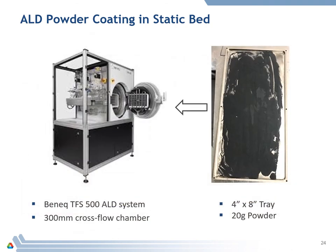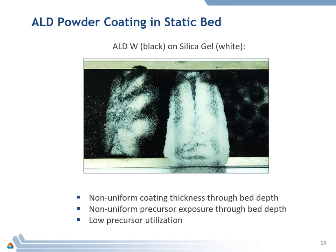One way to coat larger quantities of powder is to use a larger tray. We have a Beneq TFS 500 ALD system, a viscous flow cross-flow type arrangement, into which we can insert a larger tray — in this example about 20 grams of cathode powder on a four-inch by eight-inch tray. However, one disadvantage of coating powder in a static bed is shown in another photograph: when coating silica gel with ALD tungsten, the top surface appears black indicating coating, but once you disturb the powder, the material underneath is not coated. There is non-uniform thickness as a function of depth into the bed, because the precursor must diffuse from the top down, giving larger exposures at the top.